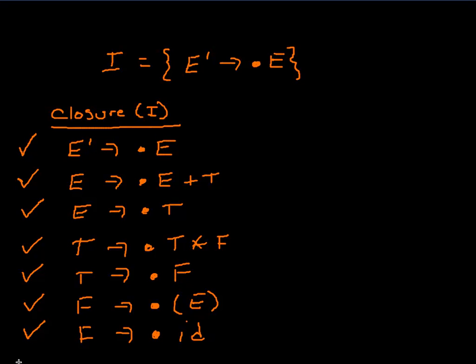This completes the computation of the closure of I, where I is the initial item from the augmented grammar — E prime produces dot E. This closure is what starts off the construction of all the sets of items. In the next few videos, we'll produce a full set of items where each set corresponds to a state in the state table, allowing us to decide when to push to the stack, when to reduce, and when to go to another state.